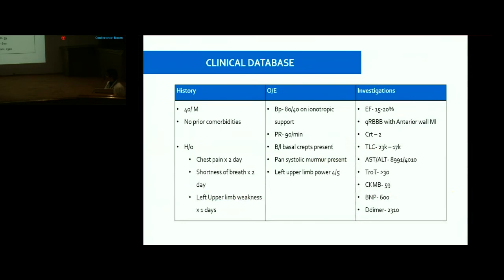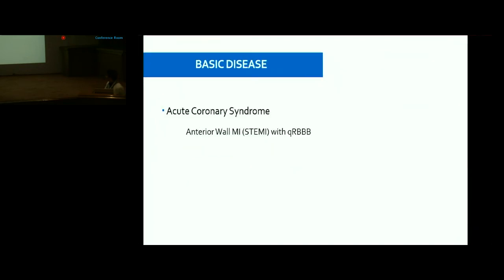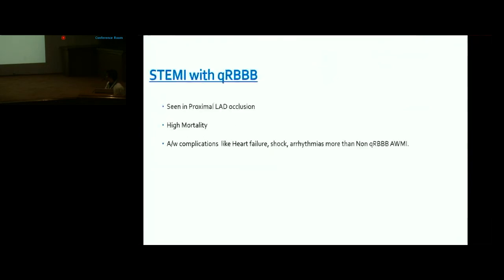Clinical database summary: 40-year-old male with no prior comorbidities, history of chest pain, shortness of breath, left upper limb weakness, shock on inotropic support, bilateral basal crepitations, pansystolic murmur. Basic disease: acute coronary syndrome — anterior STEMI with QRBBB pattern. ST elevations in V1-V5 with QRBBB, raised cardiac markers, echo showing LAD territory hypokinesia. STEMI with QRBBB pattern is associated with proximal LAD occlusion and carries high mortality.